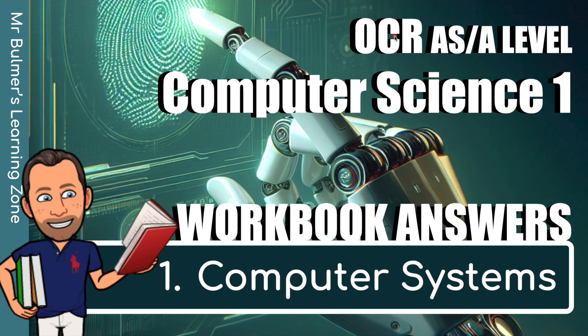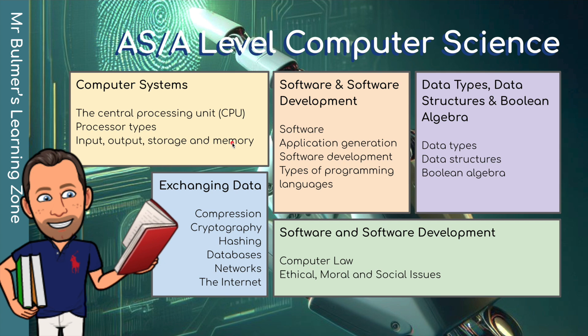Hello and welcome to the first video in a series for OCR AS A level computer science. We're looking at the workbook and the answers. This is for chapter one, computer systems, where we're going to be talking about the CPU and processor types, inputs, output, storage and memory. We've got five chapters in total. This is the first one.